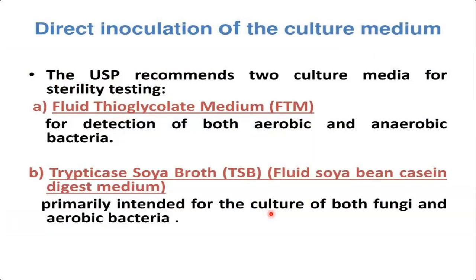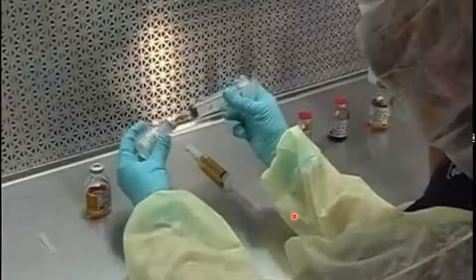For the direct inoculation of culture medium method, the United States Pharmacopeia recommends two culture media. The first is Fluid Thioglycolate Medium (FTM), used for detection of aerobic and anaerobic bacteria. The second is Trypticase Soya Broth (TSB), that is Fluid Soybean Casein Digest Medium, primarily used for the culture of fungi and aerobic bacteria.